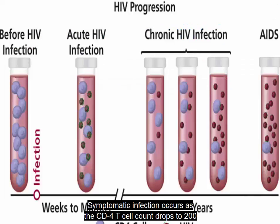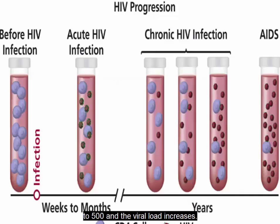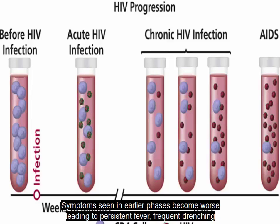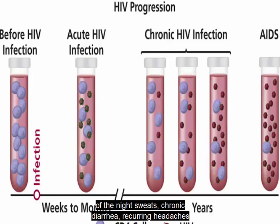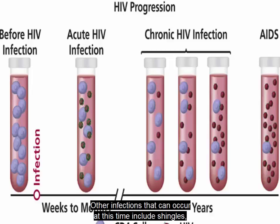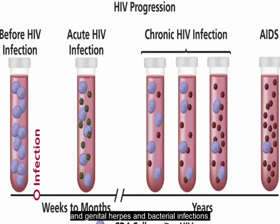Symptomatic infection occurs as the CD4 T-cell count drops to 200 to 500 and the viral load increases. Symptoms seen in earlier phases become worse, leading to persistent fever, frequent drenching night sweats, chronic diarrhea, recurrent headaches, and fatigue severe enough to interrupt normal routines. Other infections that can occur at this time include shingles, persistent vaginal Candida infections, outbreaks of oral and genital herpes, and bacterial infections.